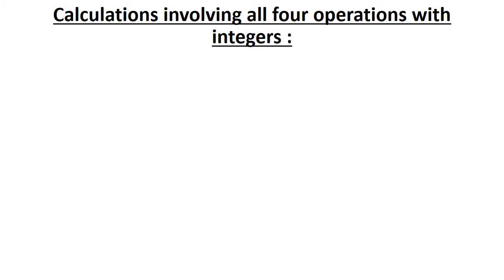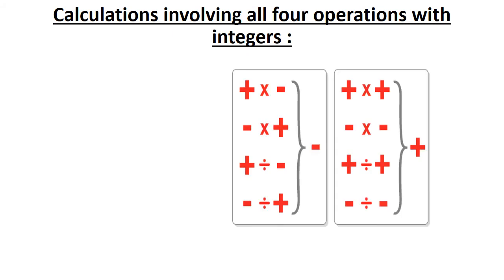Calculations involving all 4 operations with integers. Addition: negative 24 plus, in brackets, negative 15 plus 3 equals. Negative 24, then negative 15 plus 3 equals negative 36.